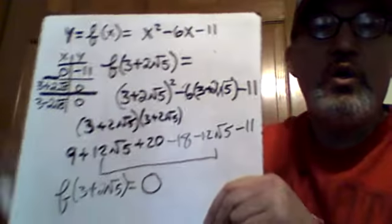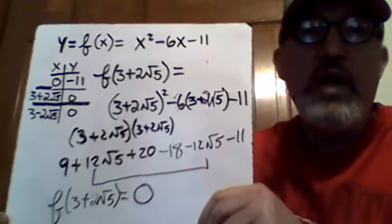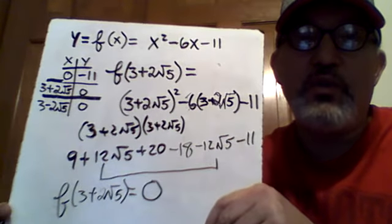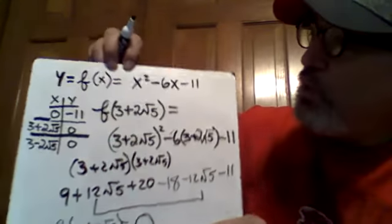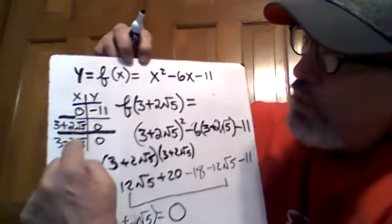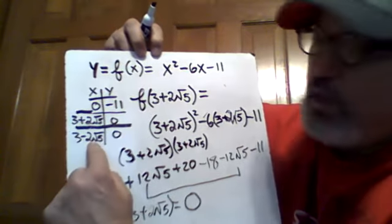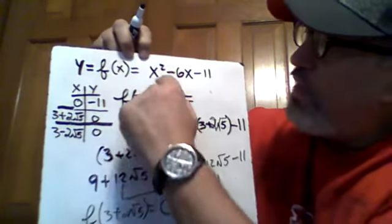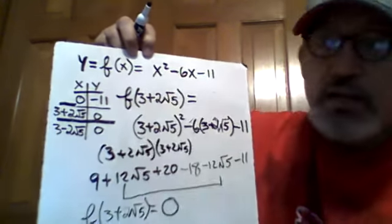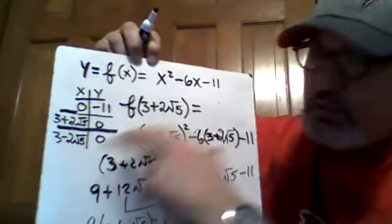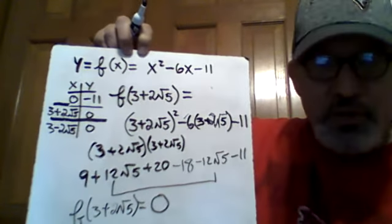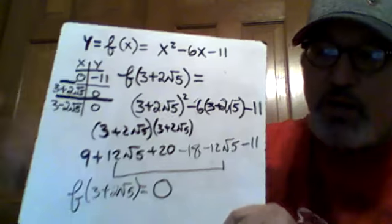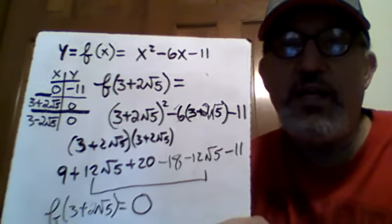I'm going to do what math teachers and math textbooks often do — I'm sure it's a favorite with all the students. I'm going to leave it for you to verify on your own that when you plug 3 minus 2 times the square root of 5 in for each of the x's in the function and work it out in a similar way, you will in fact get zero as well. Well, that's all for now. Take care.